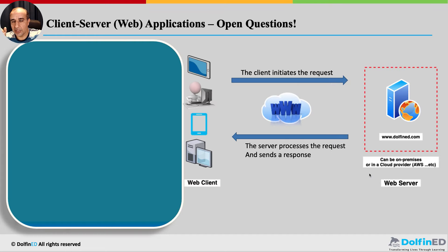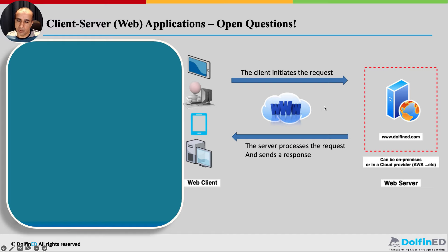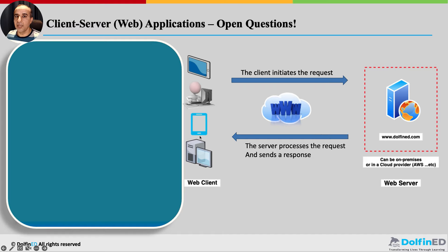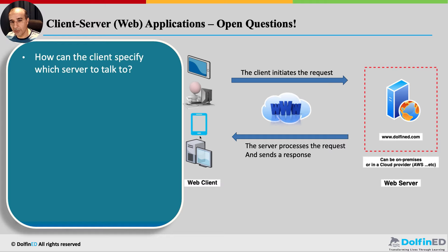Let's revisit the client-server web application. If I'm on the internet using a mobile phone, laptop, or desktop and I open Chrome and type www.dolphinet.com, magic happens — you go through the internet and get the page. How did my request get to the right IP address on the server? And how did the response make it back to me and not mistake me for someone else? That happens because of IP addresses.